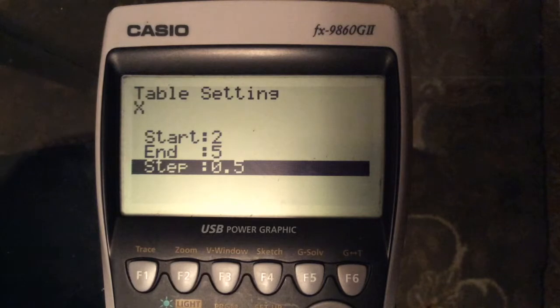This step that's currently in there to 0.5 would work out 2, 2.5, 3, 3.5, and so on. The question only asks us to work out 2, 3, 4, 5, and so on. So that's a step of 1.